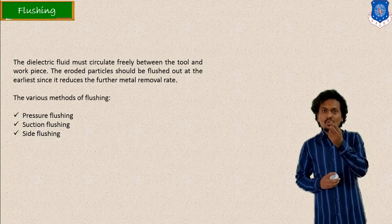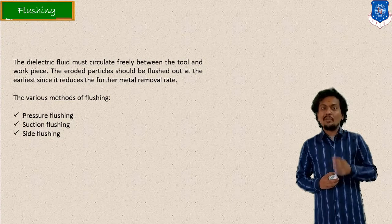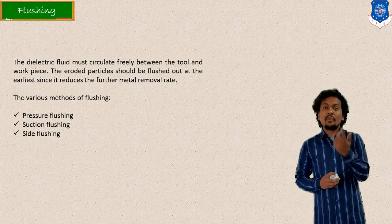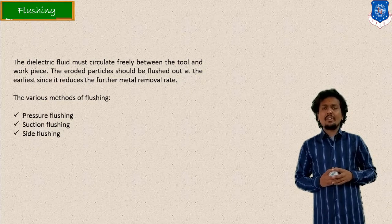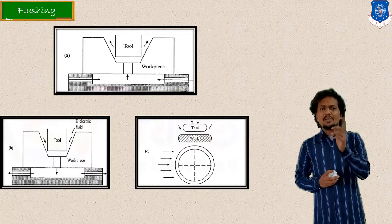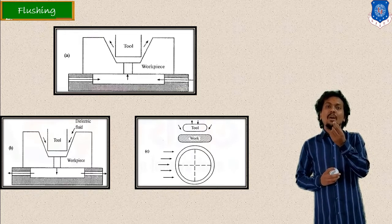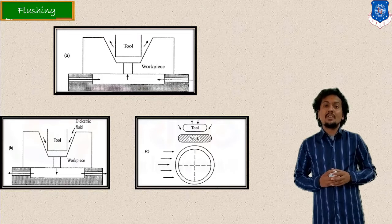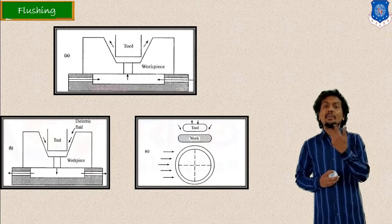The removed scrap or workpiece particles must be kept away — our purpose is to keep small material particles or debris away from the machining zone. It is always important to flush the dielectric, to continuously circulate it. When particles come between the tool and workpiece, the spark will not be generated at proper intensity. That's why it is important to circulate the dielectric medium continuously.